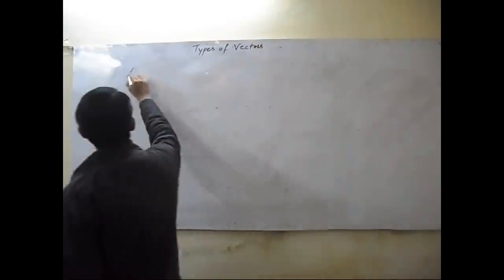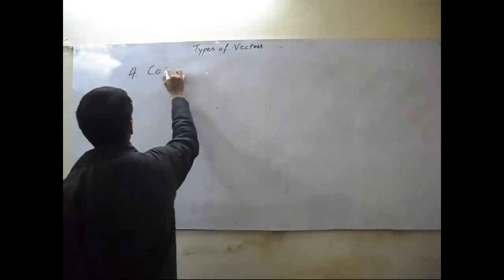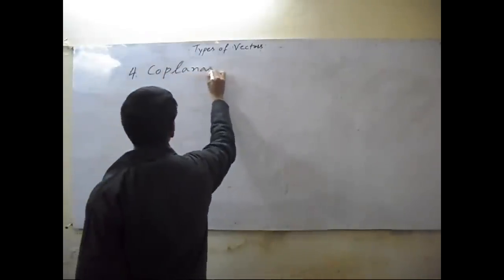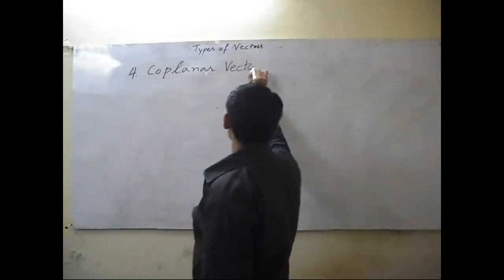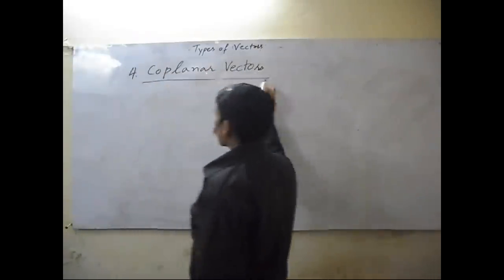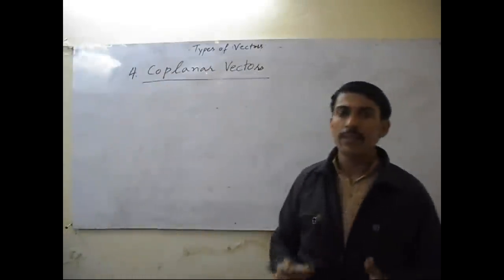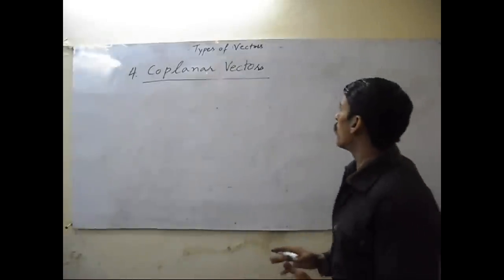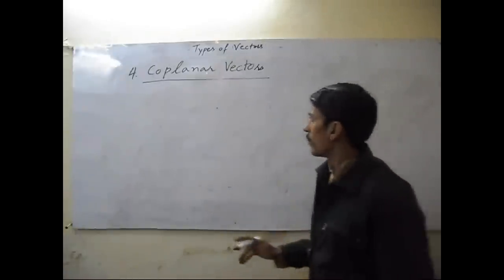Co-planar vectors. Two or more vectors are co-planar if these vectors lie on the same plane.